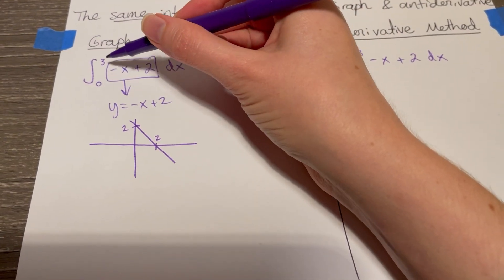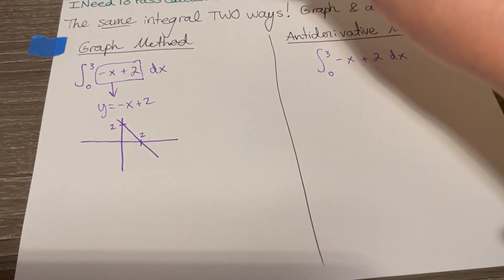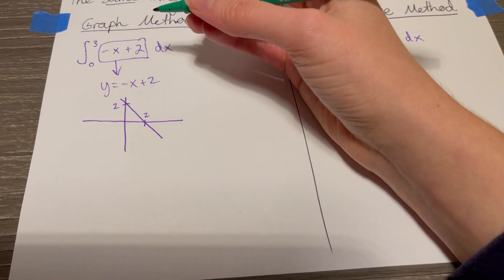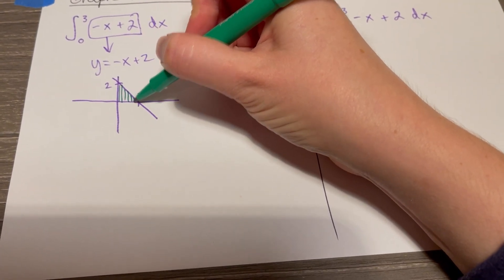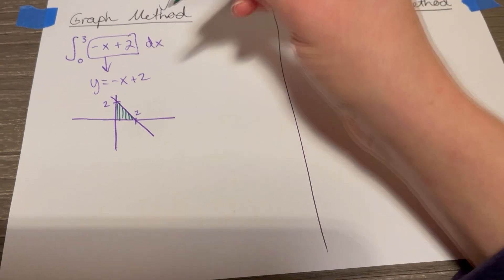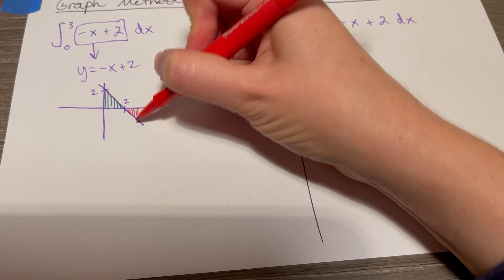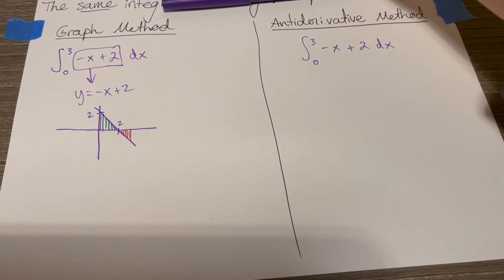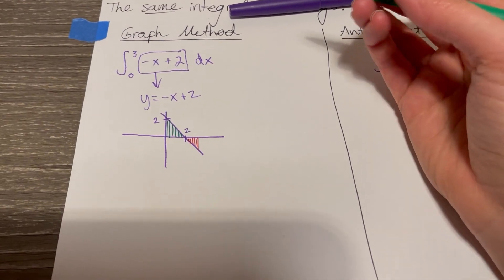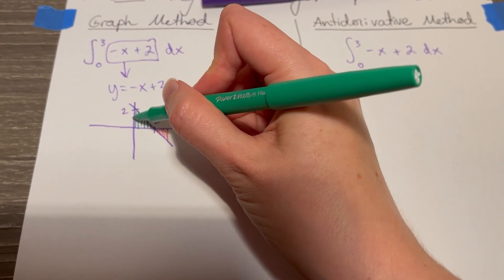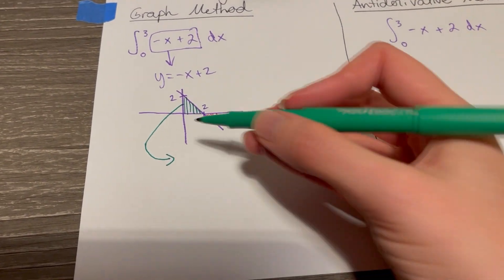We're taking the definite integral from zero to three, so we're taking the net area between the graph and the x-axis. Net area, meaning that area above the x-axis will count as positive, and the area below the x-axis, when the graph is below the x-axis, will count as negative area. So the graph method works great when you have simple geometric shapes where you can find these areas just using geometric formulas that we have from previous math classes.